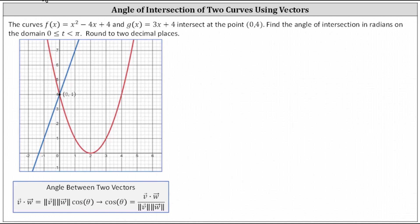To find the angle of intersection, we'll determine the slopes of the tangent lines at the point of intersection, and then we'll use those slopes to form two vectors, and then we'll use the formula below to determine the angle between two vectors.